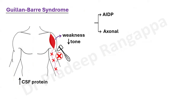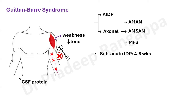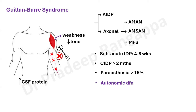Guillain-Barre syndrome is mainly divided into two major categories: acute inflammatory demyelinating variant and axonal variant. The axonal variant is further subdivided into three types: acute motor axonal neuropathy (AMAN), acute motor sensory axonal neuropathy (AMSAN), and the Miller-Fisher variant. Subacute inflammatory demyelinating polyneuropathy progression can happen over 4 to 8 weeks; chronic inflammatory demyelinating polyneuropathy progression can happen over more than 2 months. Paresthesias can be present in more than 15%, and many GBS cases can have autonomic dysfunction.